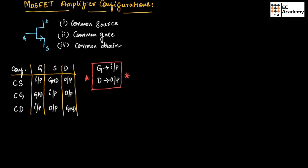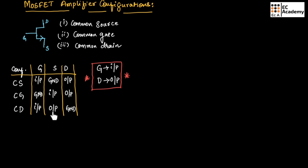To summarize: in common source configuration, gate is the input side, drain is the output side, and source is connected to ground. In common gate configuration, gate is connected to ground, source is the input side, and drain is the output side. In common drain configuration, gate is taken as input, source is taken as output, and drain terminal is connected to ground.